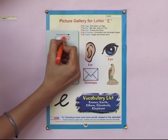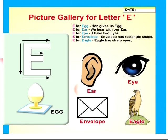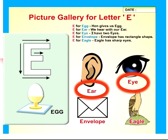Now let's look at the other pictures. Ear. Eye. Envelope. Eagle.